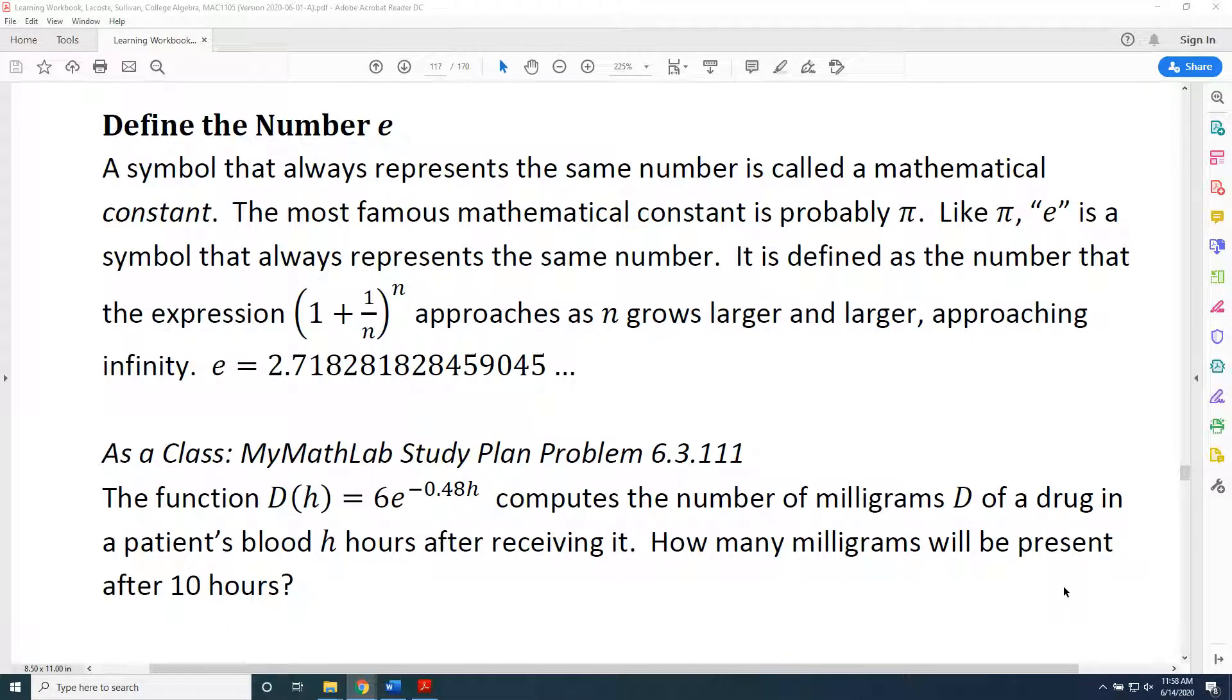Like pi, e is a symbol that always represents the same number. It is defined as the number that the expression (1 + 1/n)^n approaches as n grows larger and larger, approaching infinity.